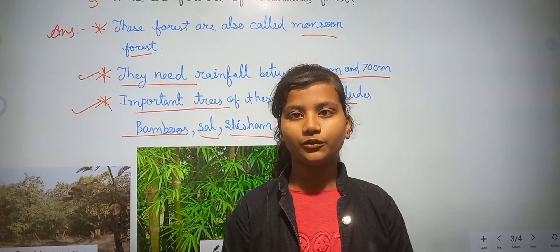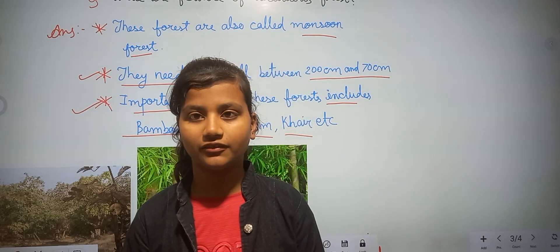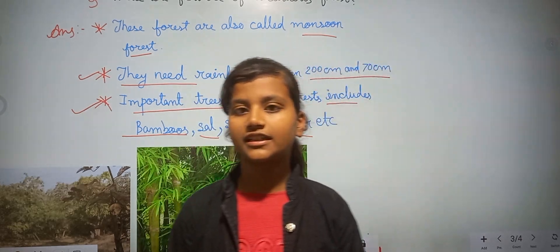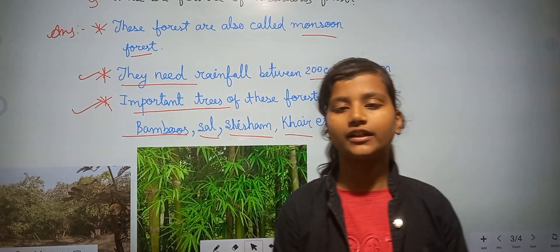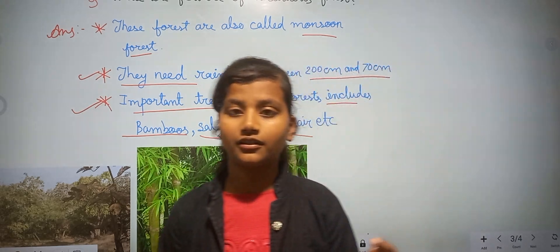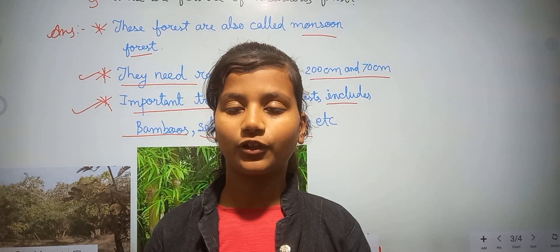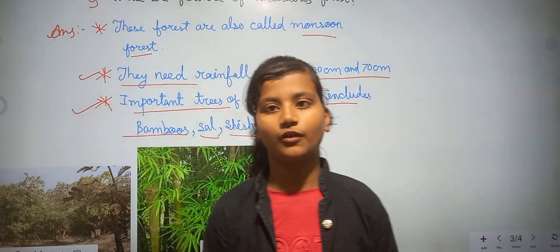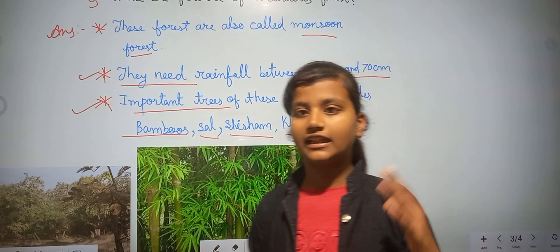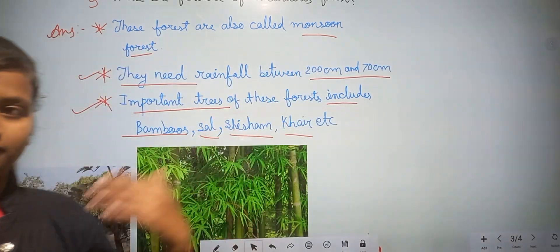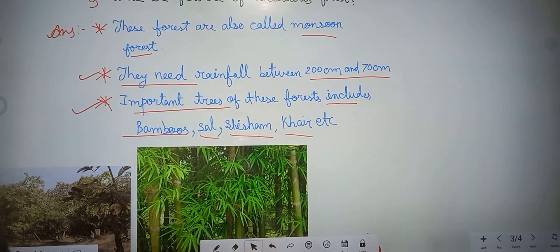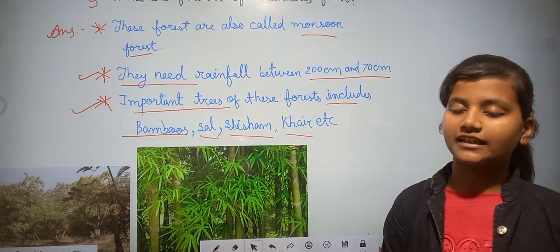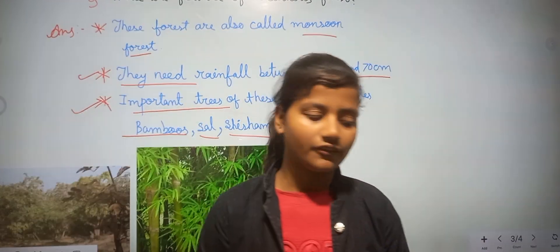I hope you understood the whole video — what is a tropical evergreen forest and what is a tropical deciduous forest. In the next video we will discuss tropical thorn forest, montane forest, and mangrove forest. In the next lecture we will see all the types of vegetation found in India. That's all for today — thank you, have a nice day.